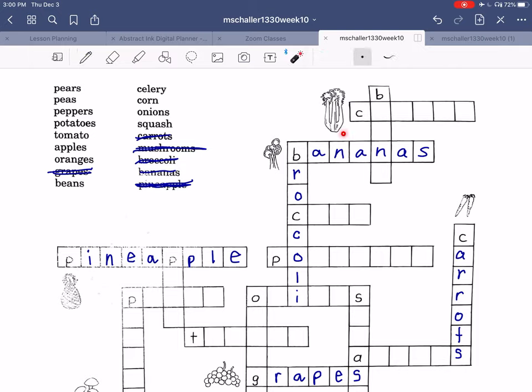Then here, what is this one? Our last picture starts with a C. Celery. C-E-L-E-R-Y. Cross off celery.